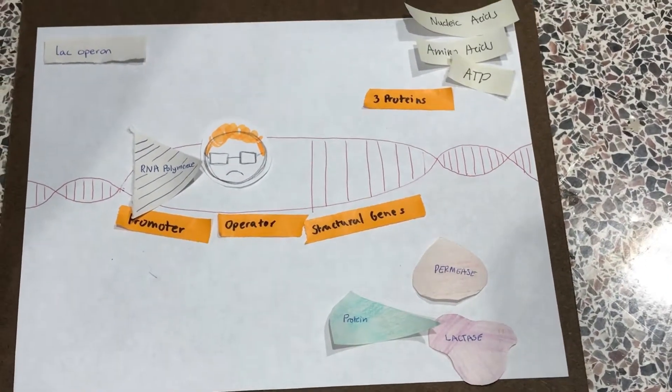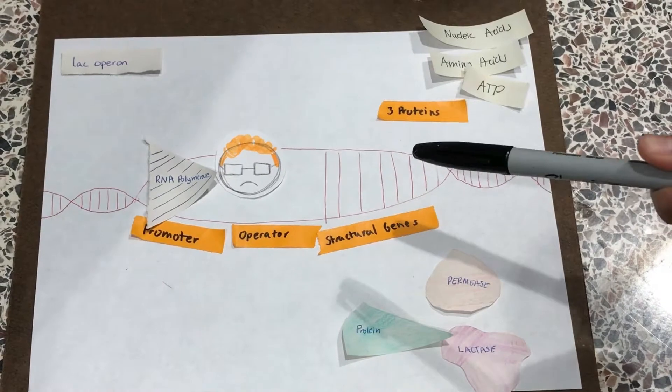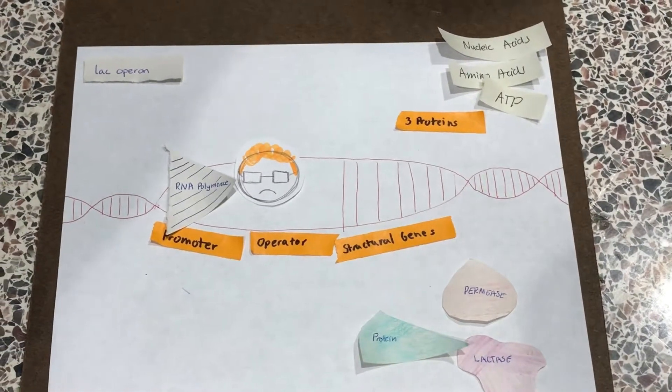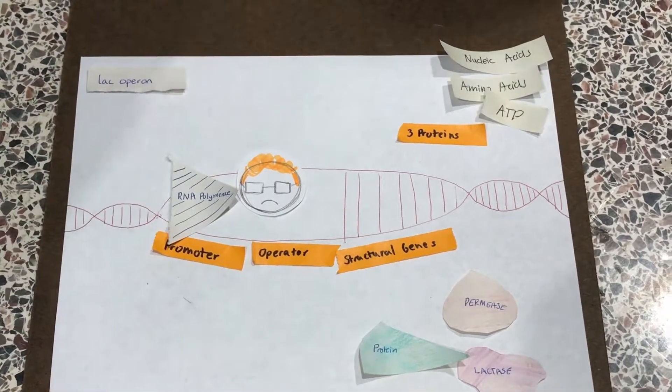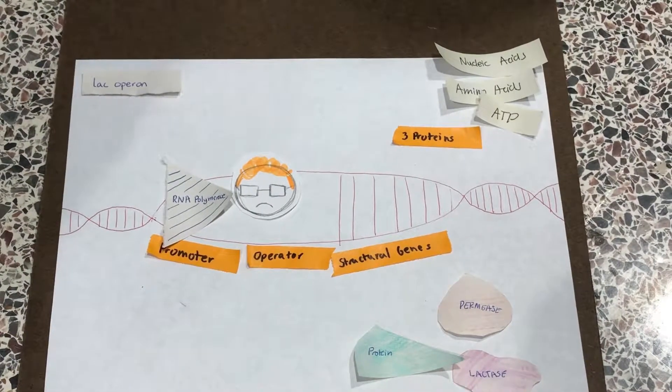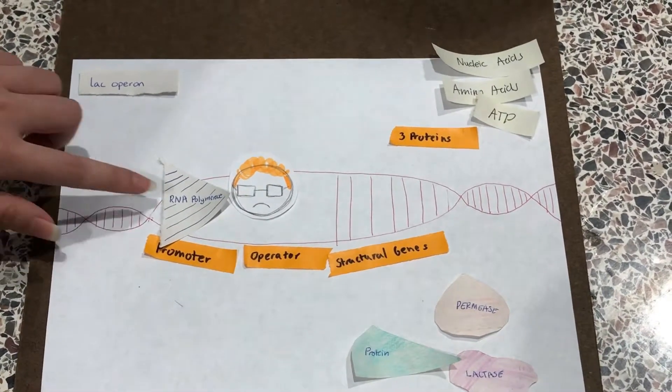However, there's a thing called the active repressor. Its job is to block RNA polymerase from reading these structural genes so that it will not be wasting materials on making proteins when lactose is not present.